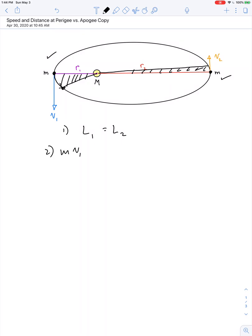Mass times velocity 1 times distance at position number 1 equals mass times velocity 2 times position number 2, and the mass cancels out of the equation. So we can say that the speed at position number 1 is equal to R2 over R1 times the speed at position number 2.